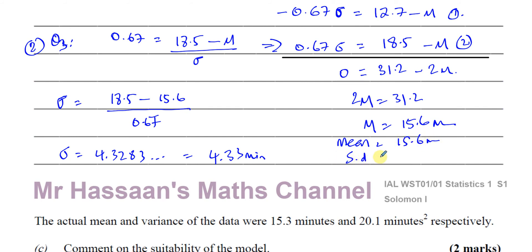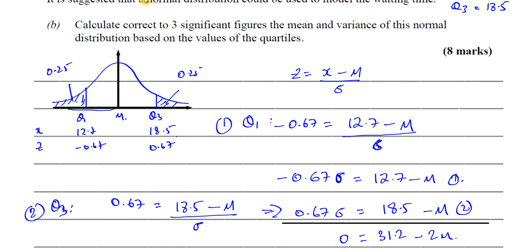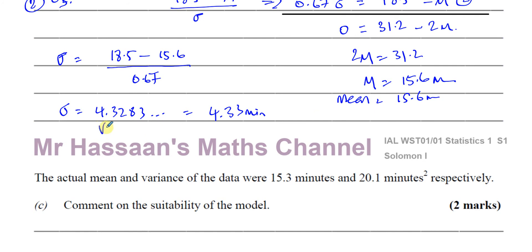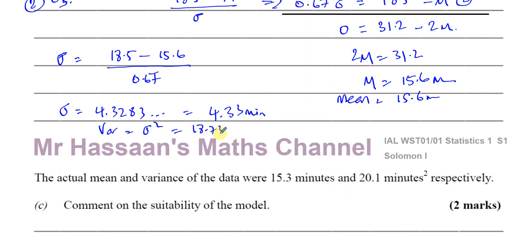We want the variance, not just the standard deviation. The variance is sigma squared. Squaring 4.33 gives 18.734, so the variance equals 18.7 minutes squared to 3 significant figures. Those are the answers for part B: mean is 15.6 minutes and variance is 18.7 minutes squared.